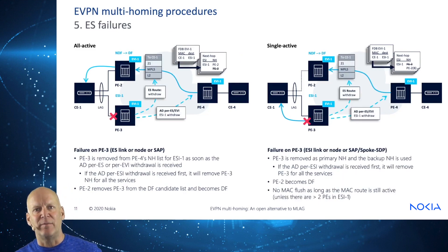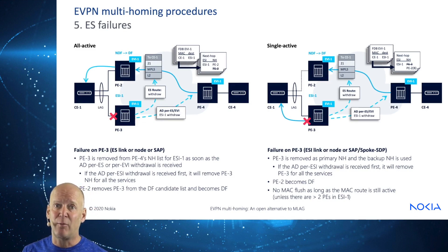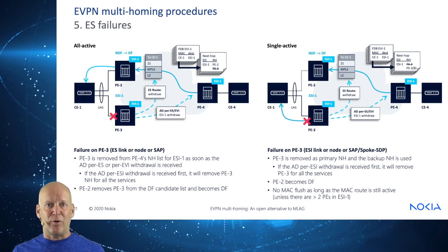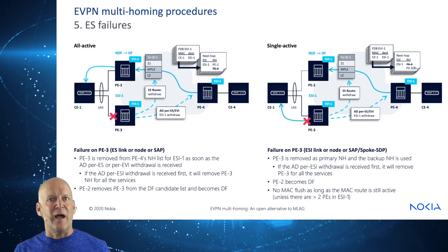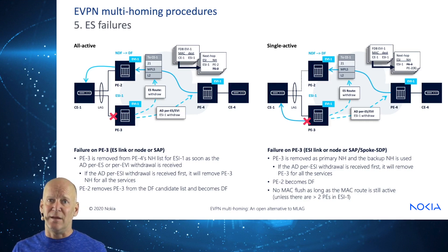Failure scenarios — this is where it gets interesting. A failure on PE3, whether it be an ES link, a node, or the service access point, means PE3 is removed from PE4's next hop list for the ESI as soon as the AD per ES or per EVI withdrawal is received. If an AD per ESI withdrawal is received first, it removes PE3 as next hop for all services, and PE2 becomes the DF. A failure on PE3 on the transport side removes it as primary next hop and the backup is used. PE2 becomes the designated forwarder, and there's no MAC flush as long as the MAC route is still active, unless there are more than two PEs in ESI1.